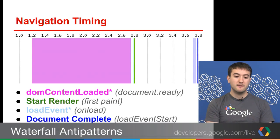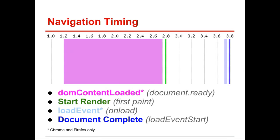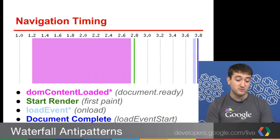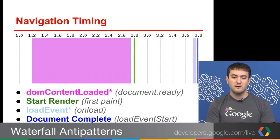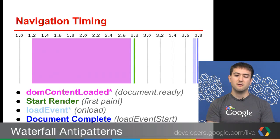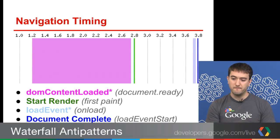Moving on now to navigation timing. When you are using a more modern browser, you might see some extra colors in your waterfall chart. Almost all browsers will have a vertical green and dark blue line. The green line is start render, the blue line is document complete. But we also have this purple and light blue bars with a width associated with them. Starting from left to right, this purple bar DOM content loaded is pretty much equivalent to document.ready — it will be fired whenever the document object model is done being processed. The width of this line represents the amount of time you're spending in that event handler in JavaScript.